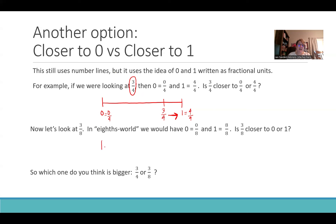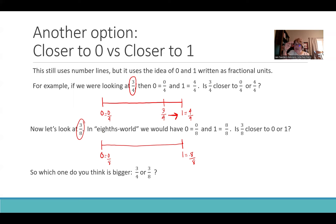Now let's do three-eighths. Zero is zero-eighths, one is eight-eighths. Do we think three-eighths is closer to zero-eighths or to eight-eighths? Is three closer to zero or to eight? It's closer to zero. So it's somewhere over here — I'll write an arrow showing it's closer to zero. Whichever fraction is closer to one is the bigger one; whichever is closer to zero is the smaller one. So three-eighths is smaller than three-fourths.